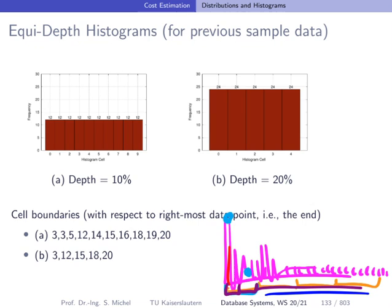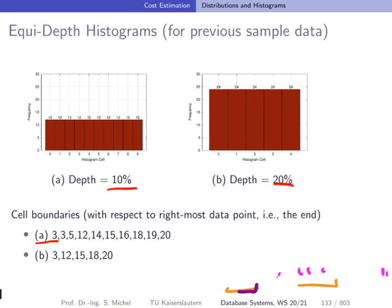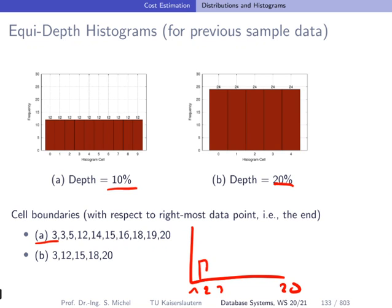For equi-depth histograms, the visualization is straightforward since all cells have the same height. For depth equal to 10% with 120 values in total, every cell contains 12 elements. For depth equal to 20%, each cell contains 24 elements. You can see the cell boundaries with respect to the rightmost data point within each cell. Going back to the plot with values 1 to 20 and the real data, you can see how to construct these equi-depth histograms.